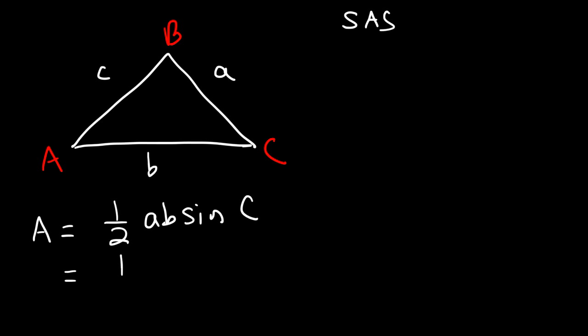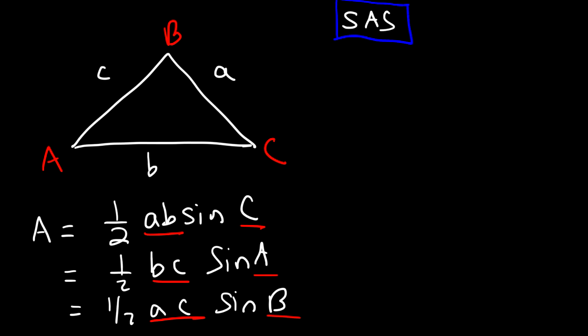You can also write the formula this way, 1 half BC sine of A, or 1 half AC sine of B. So notice that all three letters have to be different. Either you have side AB and angle C, or side BC angle A, or side AC angle B. As long as all three letters are different, you're going to have a side, angle, side triangle. And you could just use that equation to calculate the area. So let me give you an example.